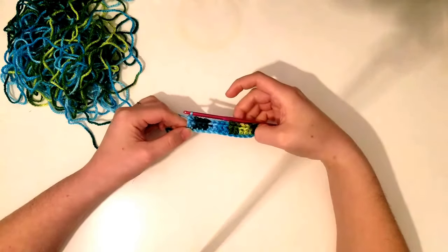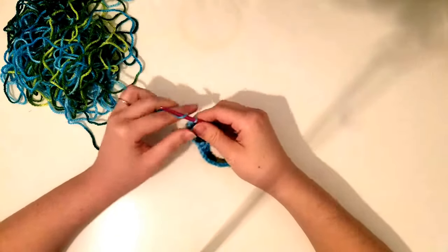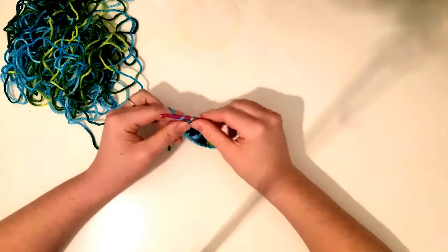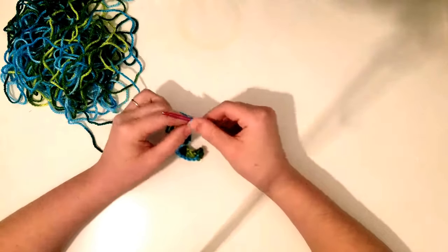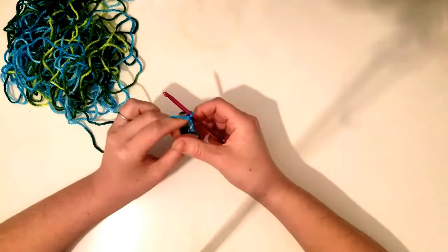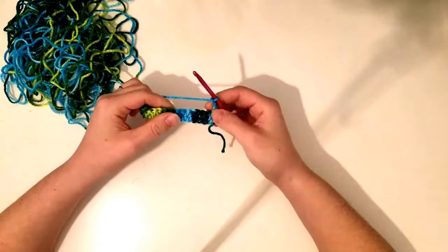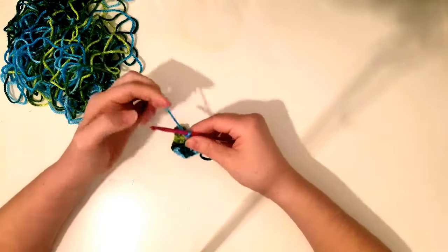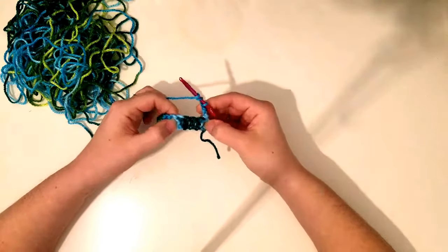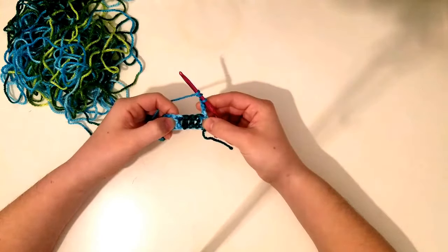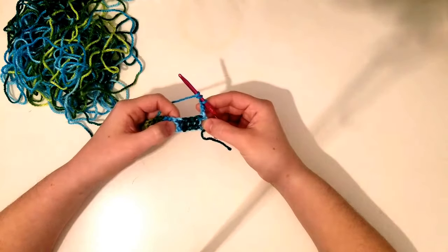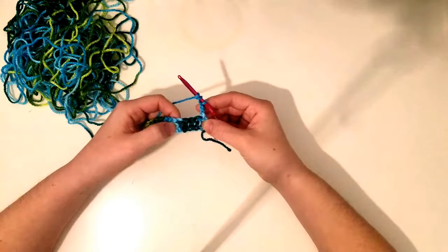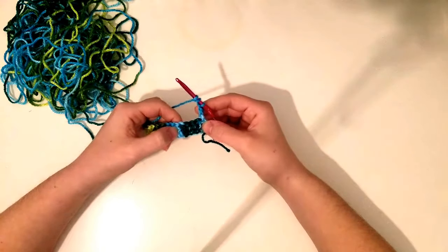Alright, there you have it. Write your row of double crochets, go ahead and chain 3, and then this chain 3 actually counts as your first double crochet. And we'll be working with these first 4 posts right here to begin with. So basically you're going to be doing a front post triple crochet in the order of 3, 4, 1, 2.